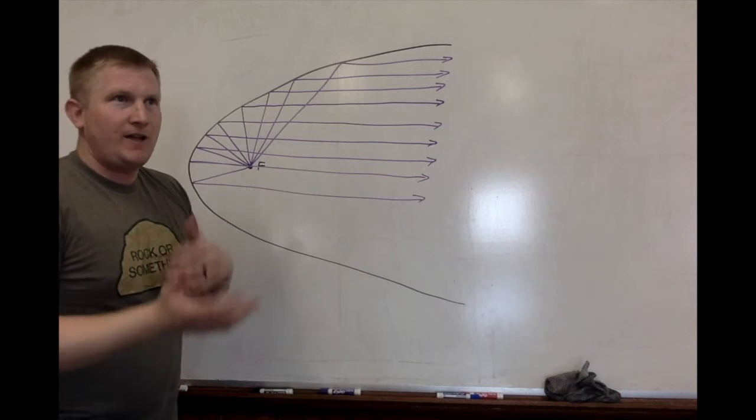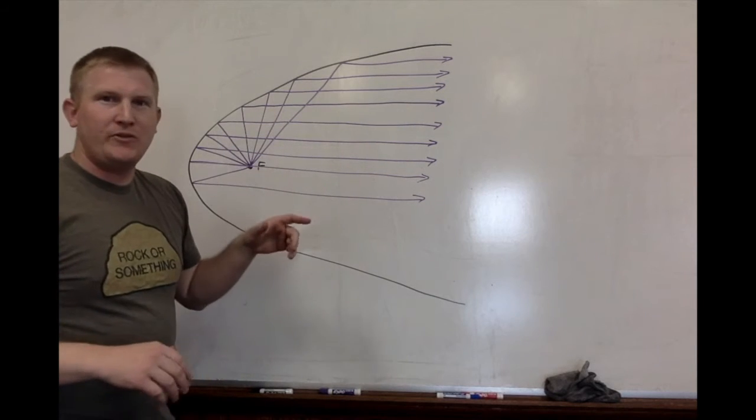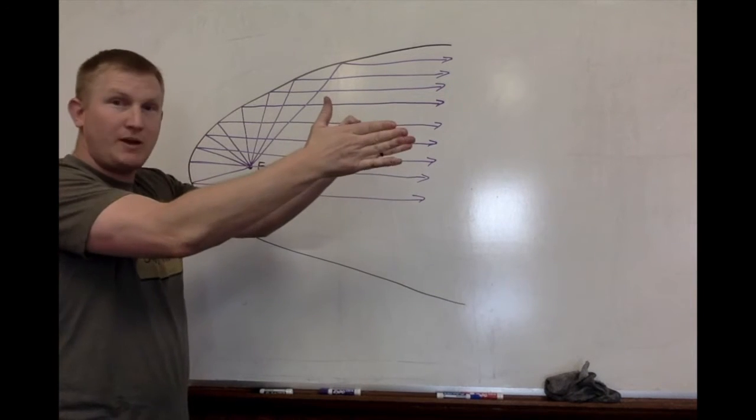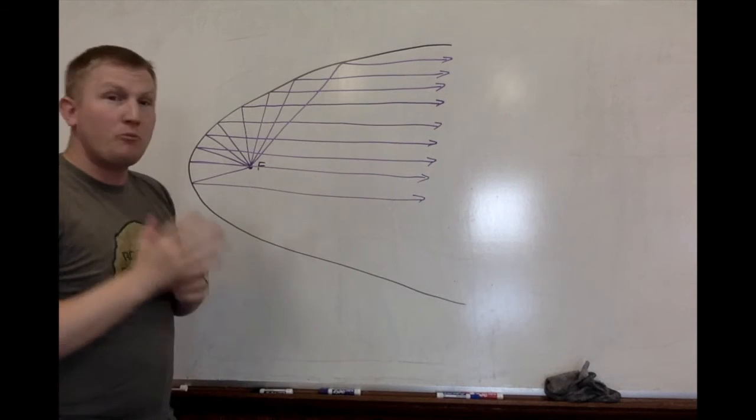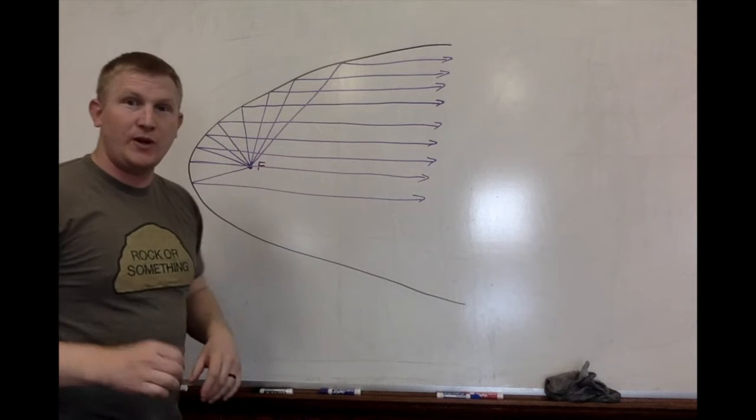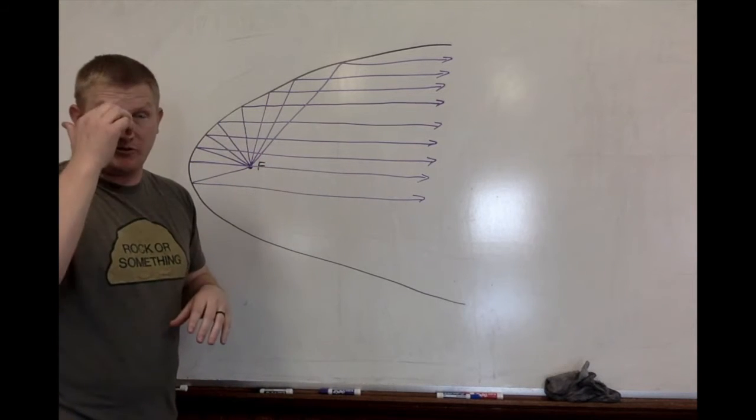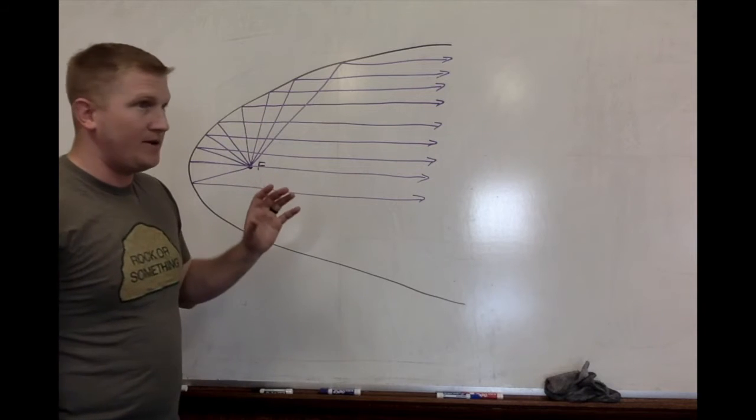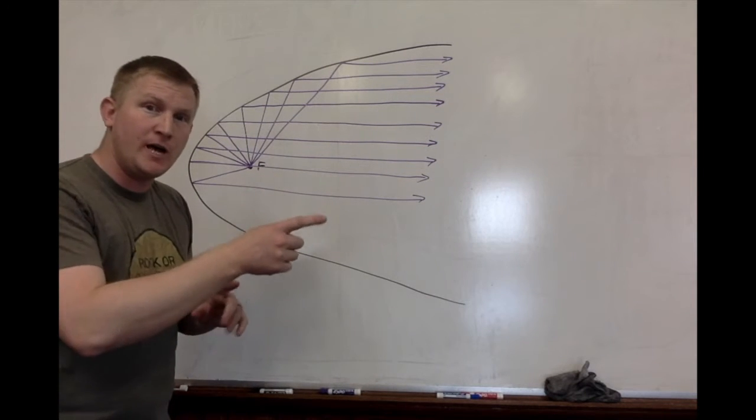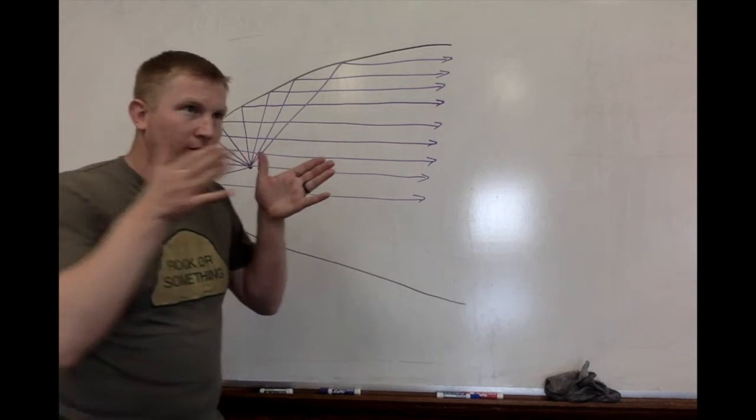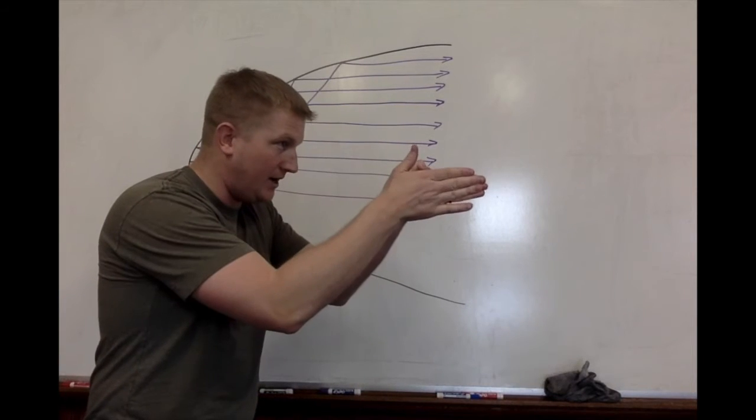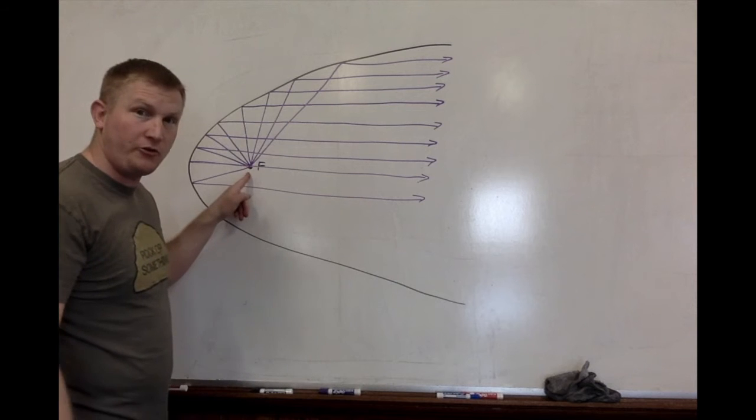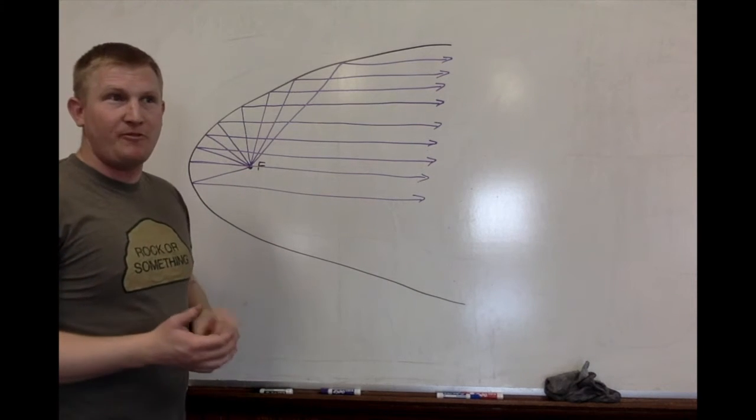Now obviously not all flashlights are perfect paraboloids, and so that's why they're not all going to be just straight beams of light. But the more powerful ones are closer to this. If you take a look at a mag light versus a dollar light that you can buy at Walmart, you can see that a mag light can shine very far because all of the light particles are focused in one direction. The light bulb is closer to the focus point.